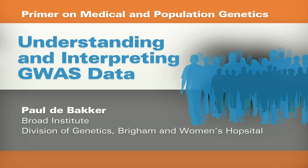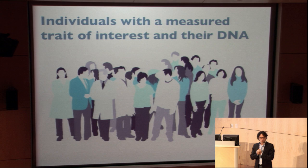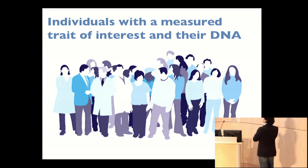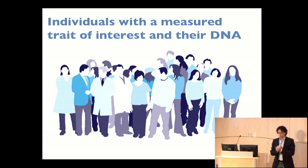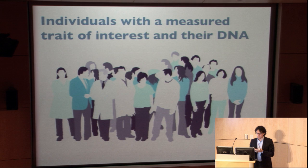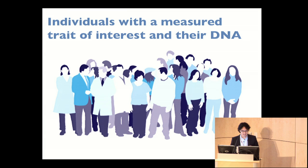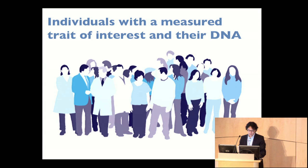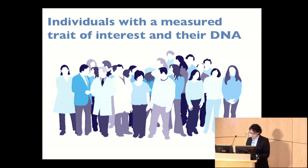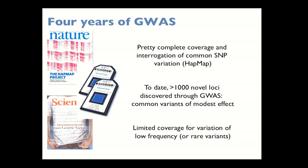The topic for today is understanding and interpreting GWAS data. It starts with the premise that we are interested in human individuals and their phenotypic variation. If it's well measured, we may be able to convince ourselves it's worth performing a genotype-to-phenotype association study, trying to figure out which genes underlie that phenotypic variation by looking at genomic DNA. Genome-wide association studies have really been enabled by a variety of technological advances to take a stab at this question: how does DNA variation associate with phenotypic variation?